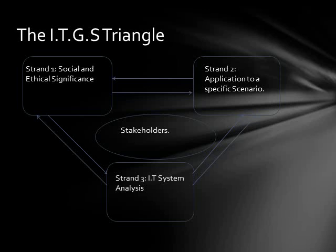The social and ethical significance has a select few designated social and ethical issues — terms used to describe the problems that arise with the usage of certain technology systems and why they need to be resolved. Strand two is application to a specific scenario, which covers what type of technologies the issue applies to, since not every piece of technology is used for the same thing. Scenarios are different divisions of those. Strand three is the IT system itself — the actual, basic, technical, component-based breakdown of what exactly the system is made of.